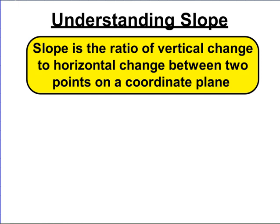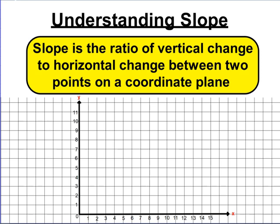Let's take a look at an example. I have a blank coordinate plane and I'm going to plot two points. The first point I'm going to plot is (2, 3) — so I went right 2, up 3, put a dot. The second point is (4, 6) — so right 4 and up 6. Now since I have two points, I can find the vertical change and the horizontal change and create a ratio, or a fraction, that represents the slope.